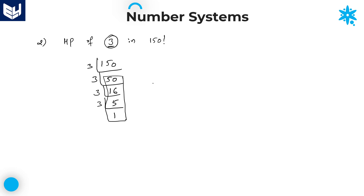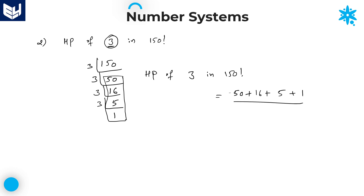The required answer is the highest power of 3 in 150 factorial, which is equal to the sum of all the quotients: 50 plus 16 plus 5 plus 1, divided by the power of prime number. The power of the prime number is 1, so the denominator value is 1. Adding: 50 plus 16 is 66, plus 5 is 71, plus 1 is 72. Therefore, the highest power of 3 in 150 factorial is equal to 72.